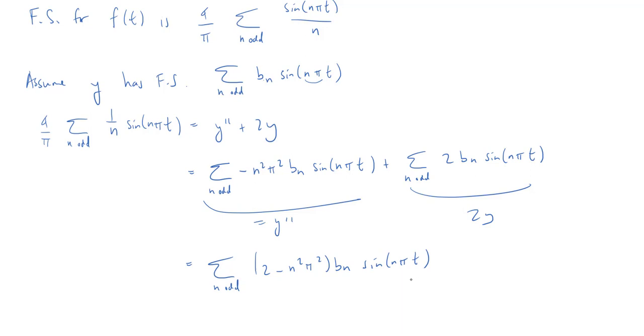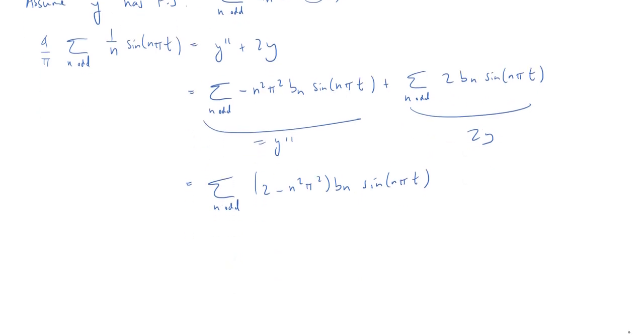And at this point, it should become reasonably clear why I was able to restrict myself just to the odd terms. Because on the left, when n is even, I get zeros. And so, if I set zero equal to this expression, well, we know that 2 is not going to equal n squared times π squared. So, that better mean that b_n is zero in those cases. So, it really was okay just to start with n being odd.